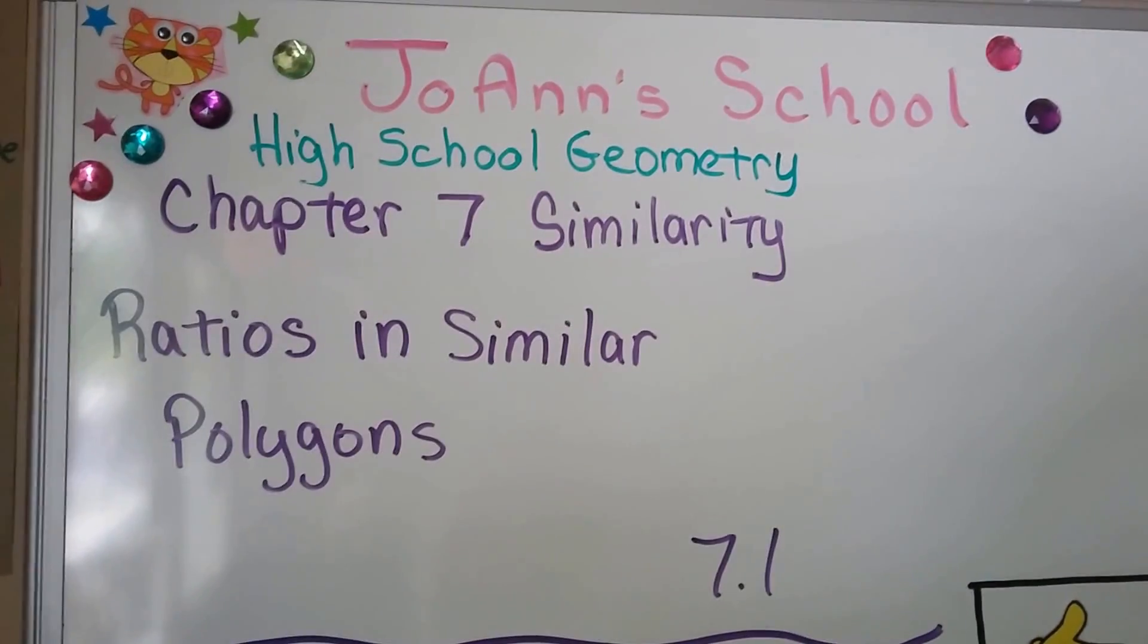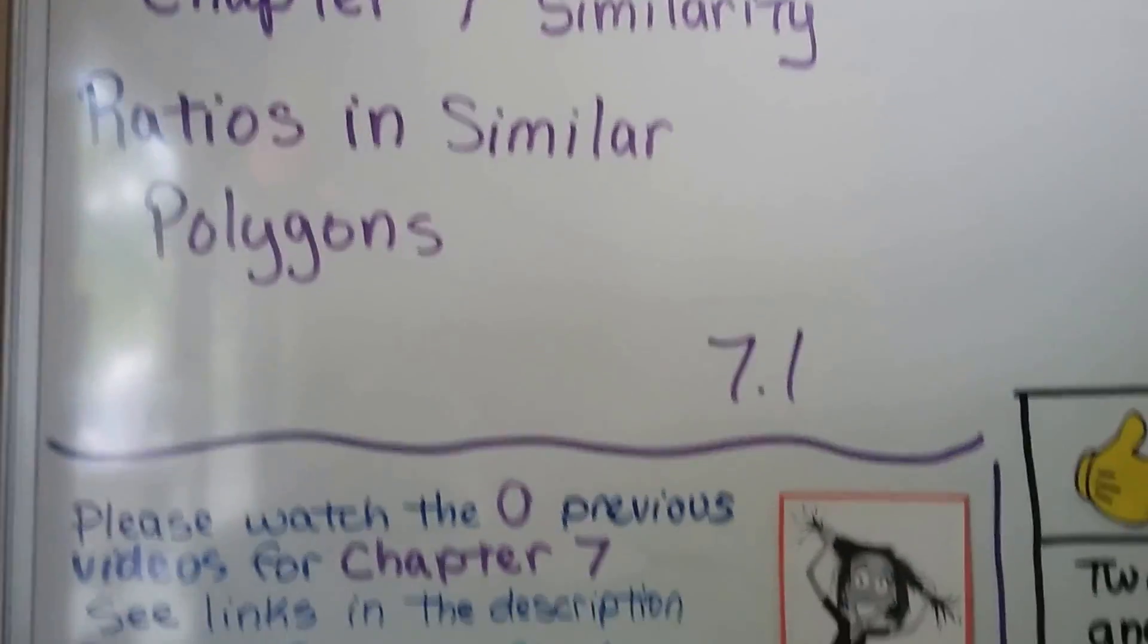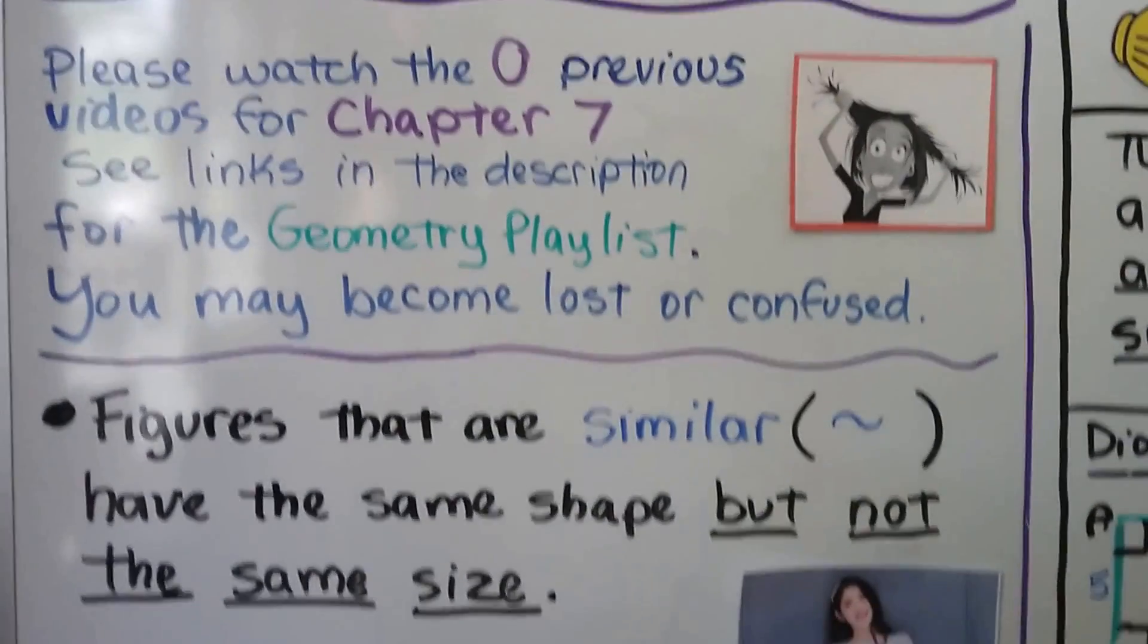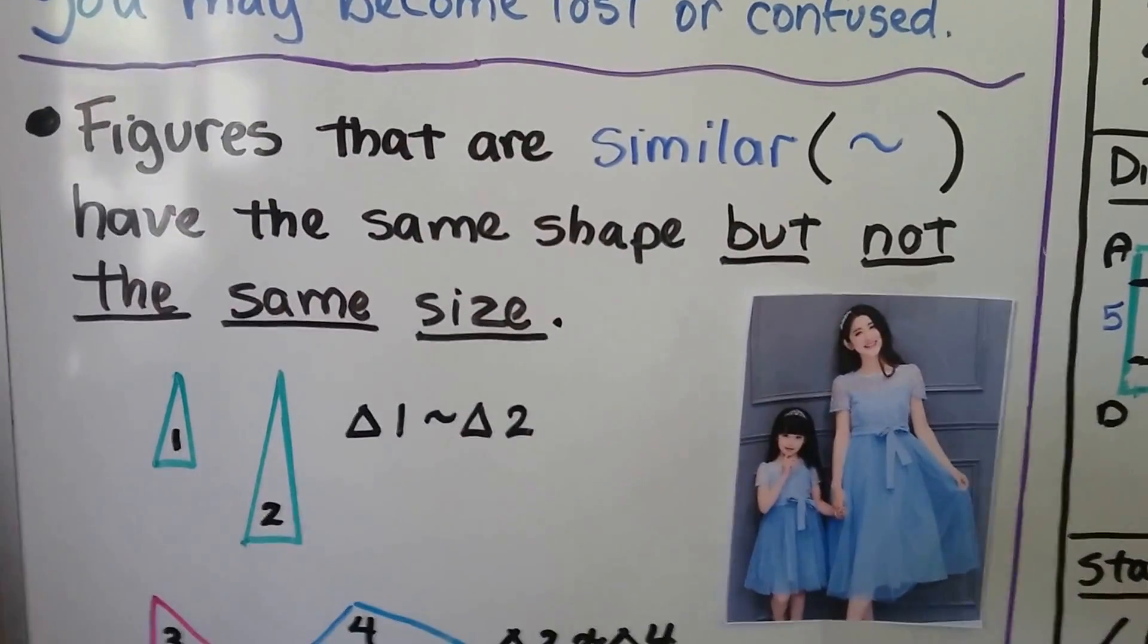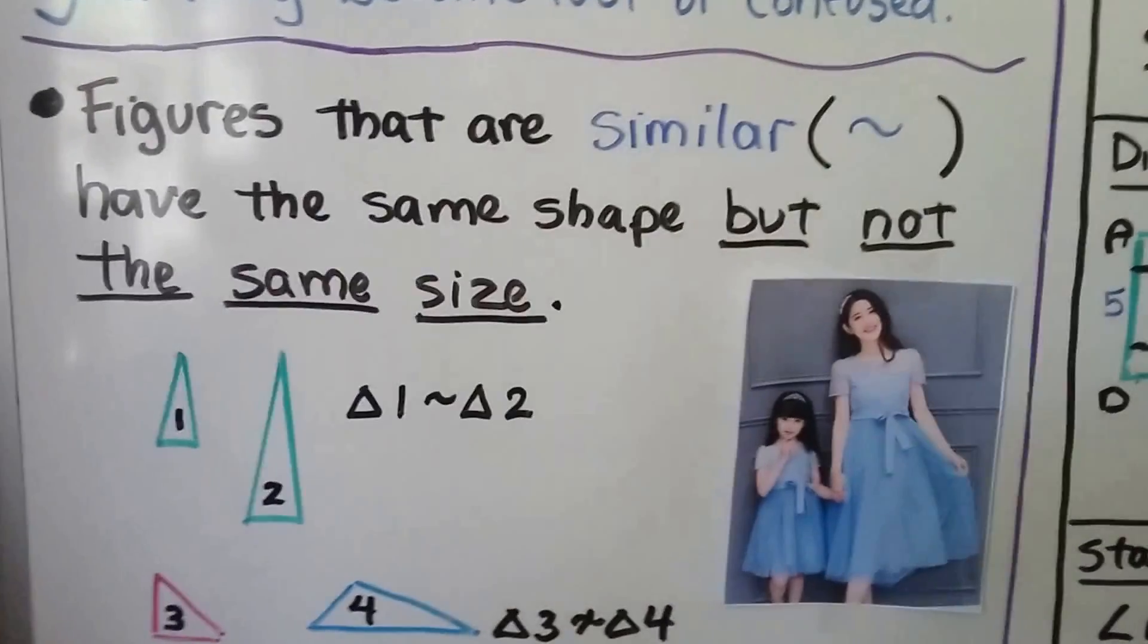We're now in Chapter 7, Ratios in Similar Polygons, section 7.1. Figures that are similar have the same shape but not the same size. We use this tilde symbol for similar in math.